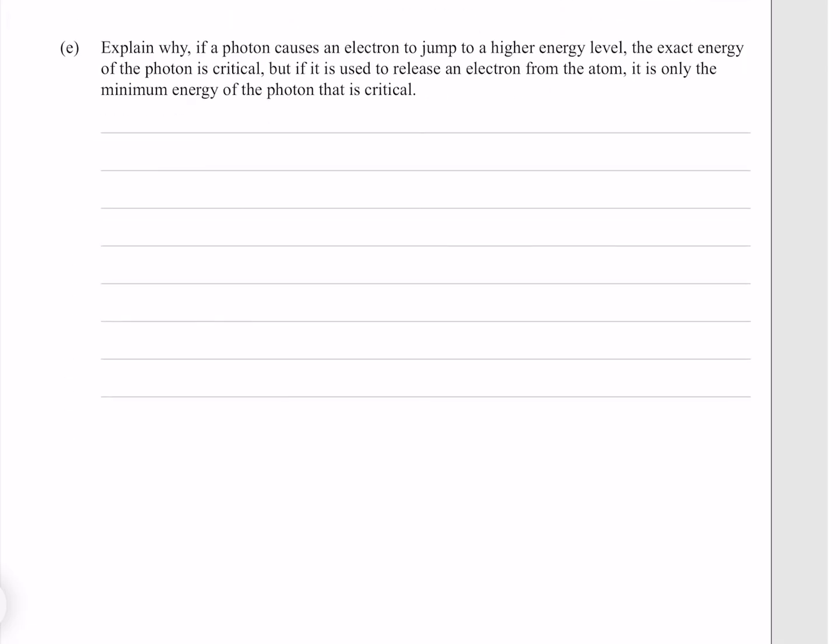Explain why, if a photon causes an electron to jump to a higher energy level, the exact energy of the photon is critical, but if it is used to release an electron from the atom, it is only the minimum energy of the photon that is critical.